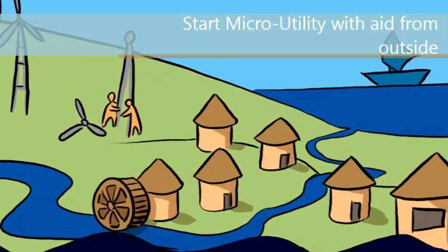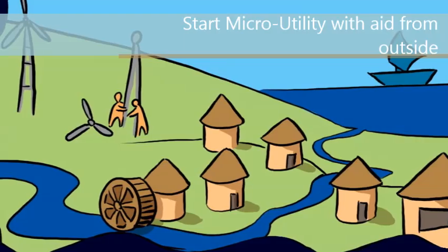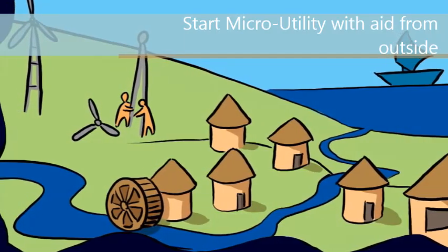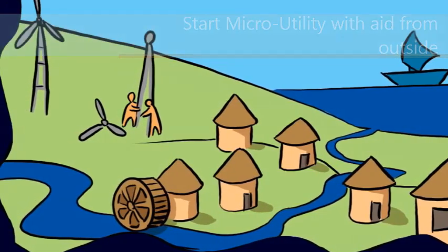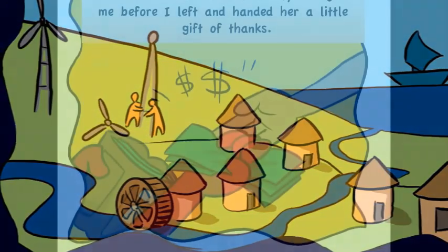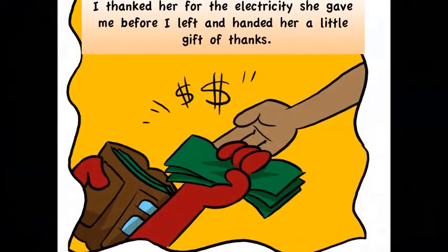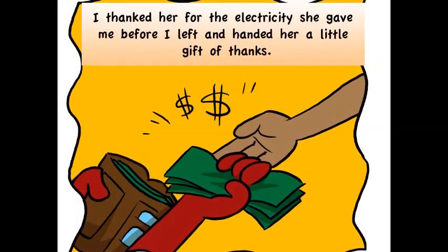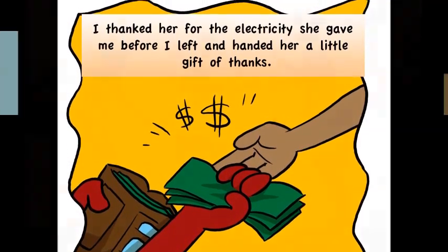Once the sale of electricity is flowing and the system is understood, these businesses can function largely independently from the host company. Because income is generated from the sale of electricity, monthly installments for the system are secured as well.